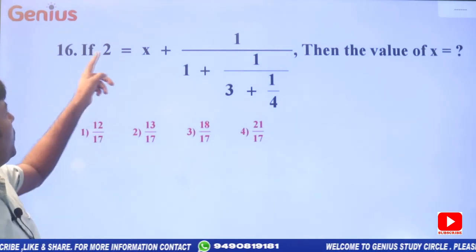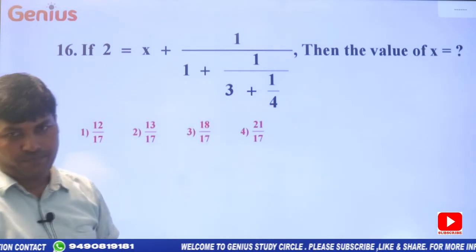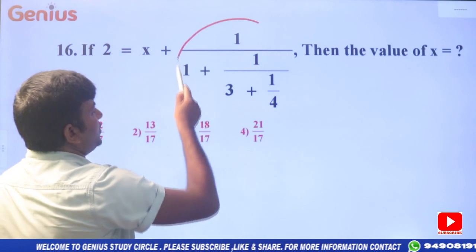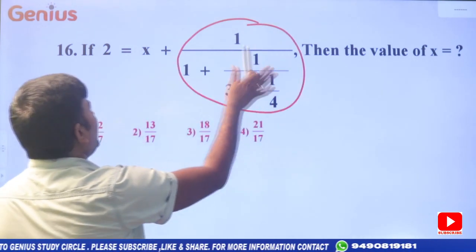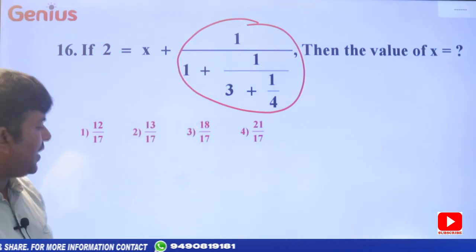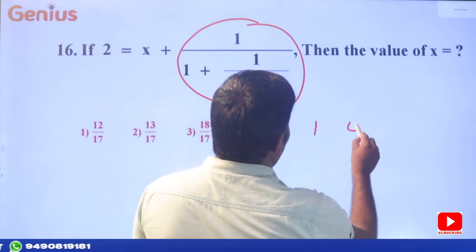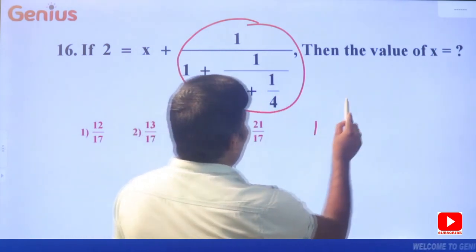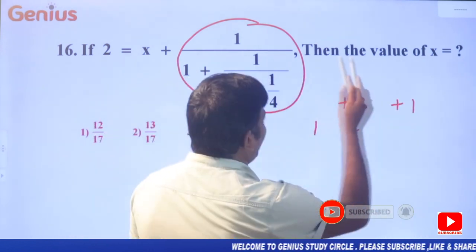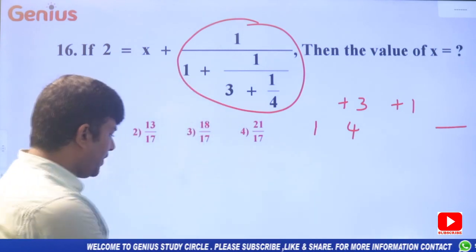Next problem: 2 = x + 1/(1 + 1/(3 + 1/4)). Find the value of x. First calculate the continued fraction part. Using the same concept: I write the 4, then plus 3, then plus 1. Take one space more.